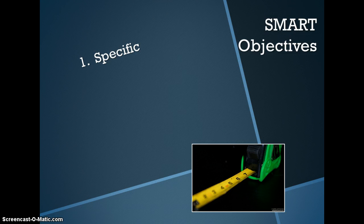S for Specific. Objectives should be unambiguous, with specific metrics and specific target conditions. Specificity can be encouraged by articulating objectives with who, what, why, and or where phrases.